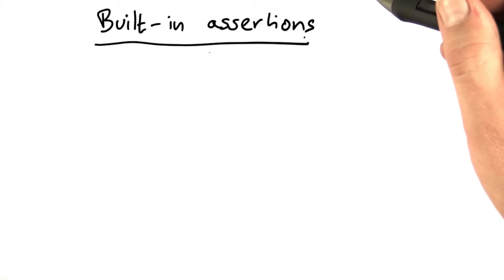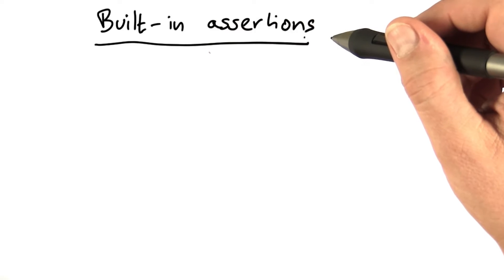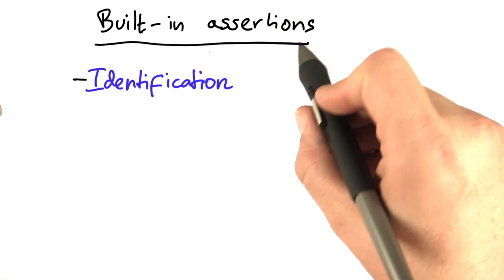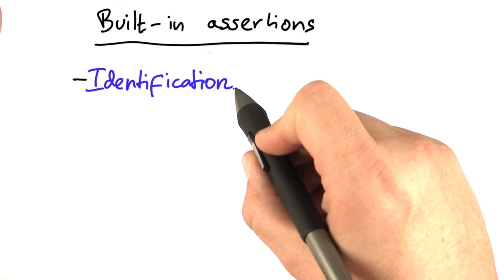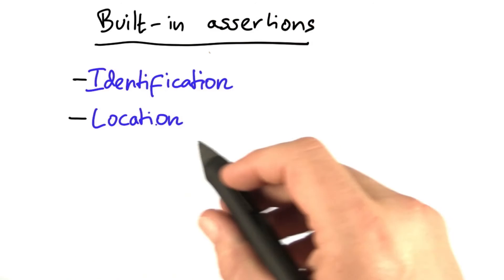While you can easily roll out your own assertion, built-in assertions typically do have a couple of advantages. There's identification. The built-in assertion typically tells you which assertion failed. There's location. They tell you where the assertion failed, that is, where in the code.